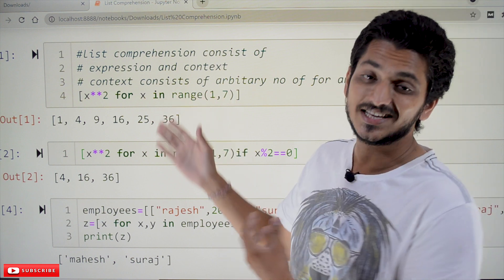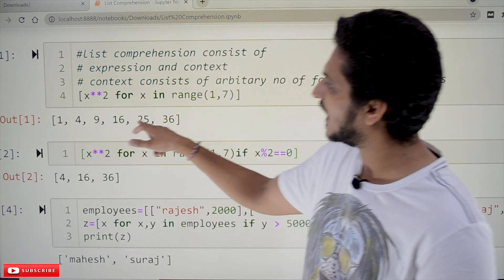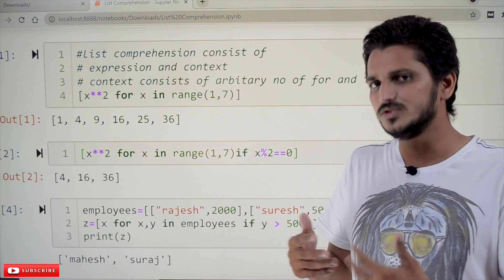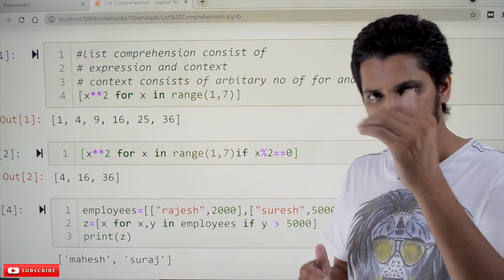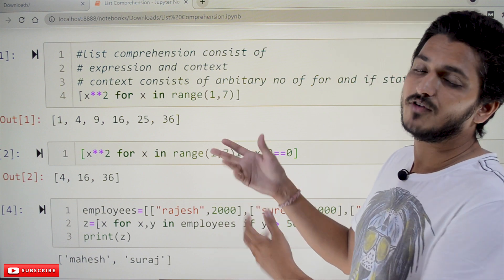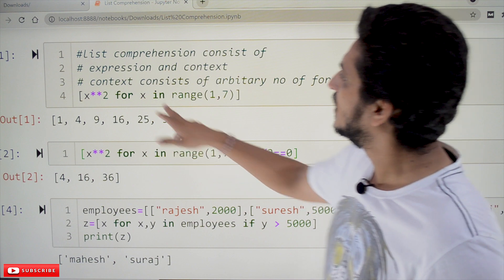So, what happens here? It is creating a list of 1, 4, 9, 16, 25, 36. The same thing we can do using our traditional way by using loops and appending it to the list. But this is one of the ways for better writing of the code.